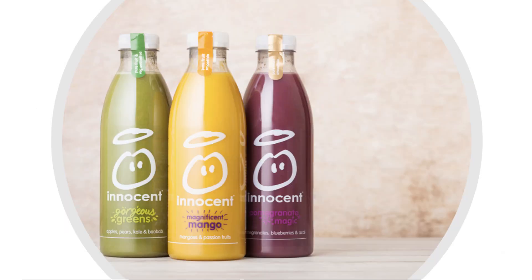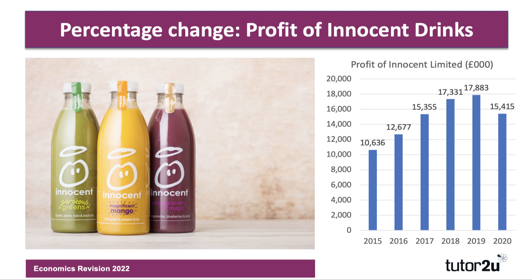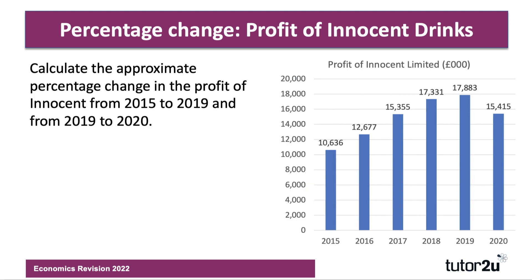Our fourth example features Innocent, which is now a mainstream drinks company. This chart shows the profits of Innocent in the UK in thousands of pounds from 2015 through to 2020. Profits were rising strongly through to 2019, hitting 17.9 million pounds, but then dropped during the first year of the pandemic. There are two calculations for this last one: calculate the approximate percentage change in profit from 2015 to 2019, and then from 2019 to 2020. Approximate means you can do a little rounding. Have a go.